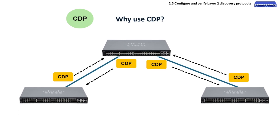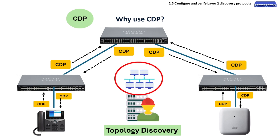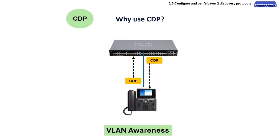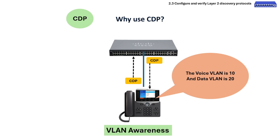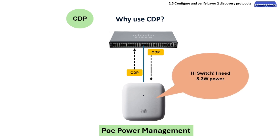Why do we use CDP? We use it for topology discovery — devices use CDP to discover directly connected Cisco devices such as switches, routers, and IP phones. This helps network engineers gather real-time information about connected devices and the physical topology. It is also used for VLAN awareness: IP phones use CDP to learn the voice and data VLAN IDs configured on the switch port. Additionally, CDP is used for POE power management, allowing access points to inform the switch about power requirements, ensuring adequate power especially when multiple devices share POE resources.